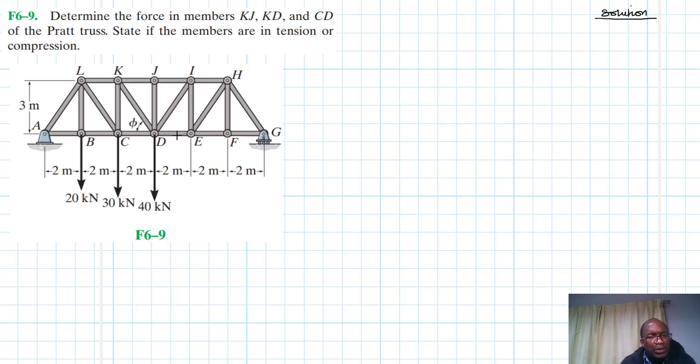For this particular problem we will be required to find the support reactions and after that we are going to section here, and then we are going to have the left hand side and right hand side. Of course we will pick the left hand side and work with it. So we have the support reactions there: AY, AX, and at the roller we have GY.